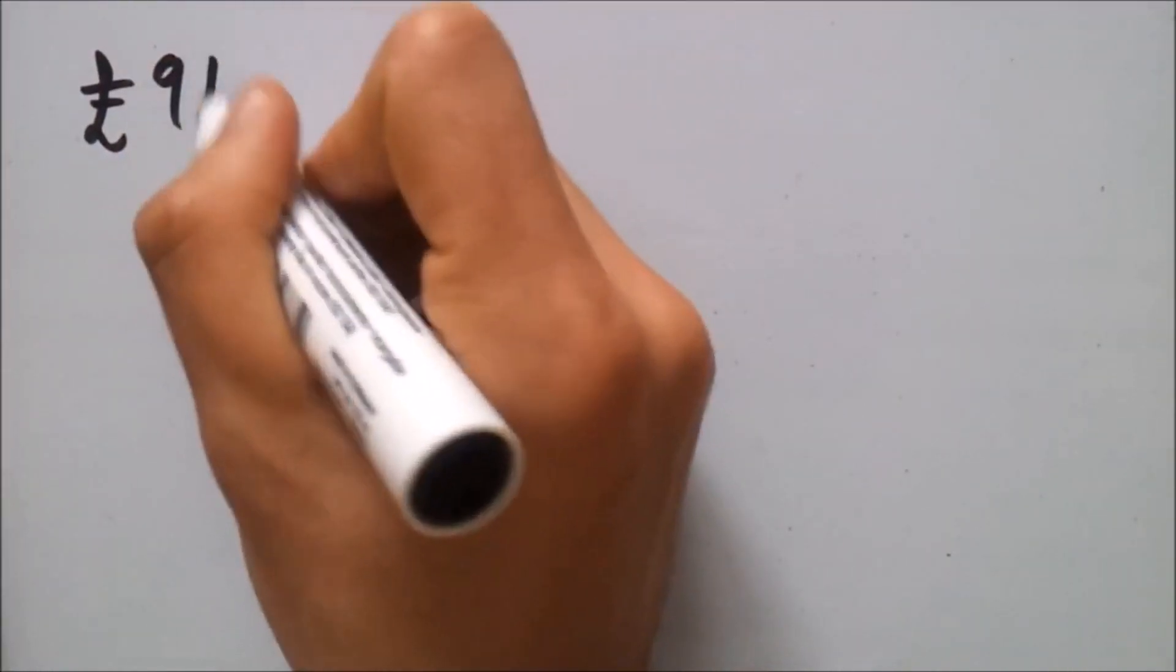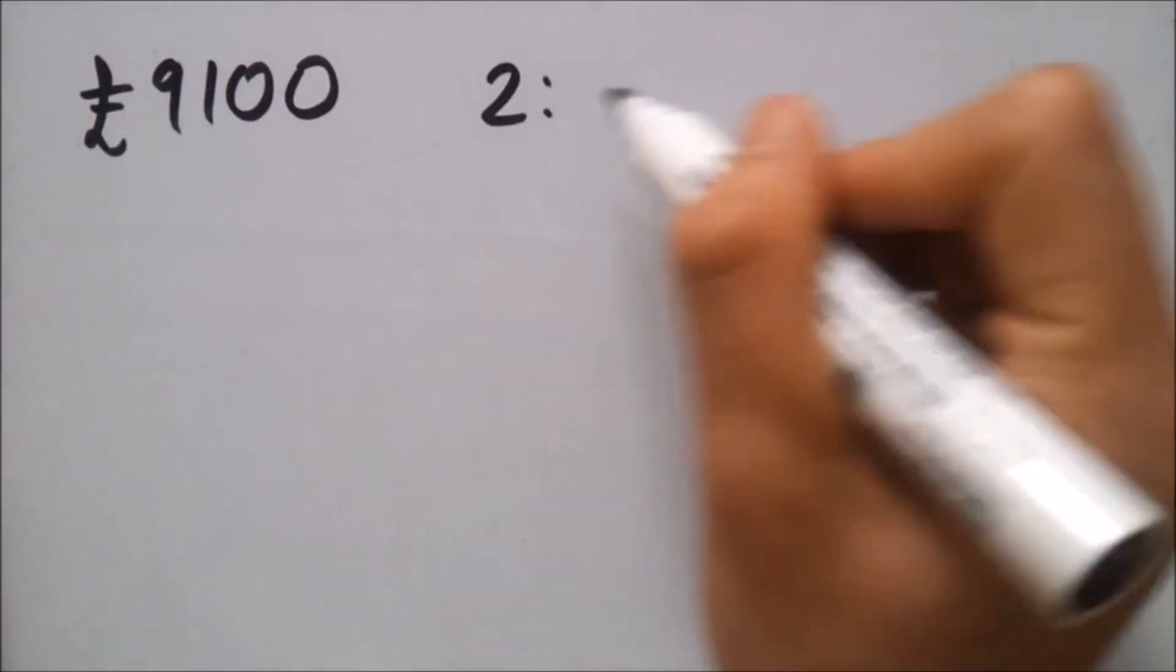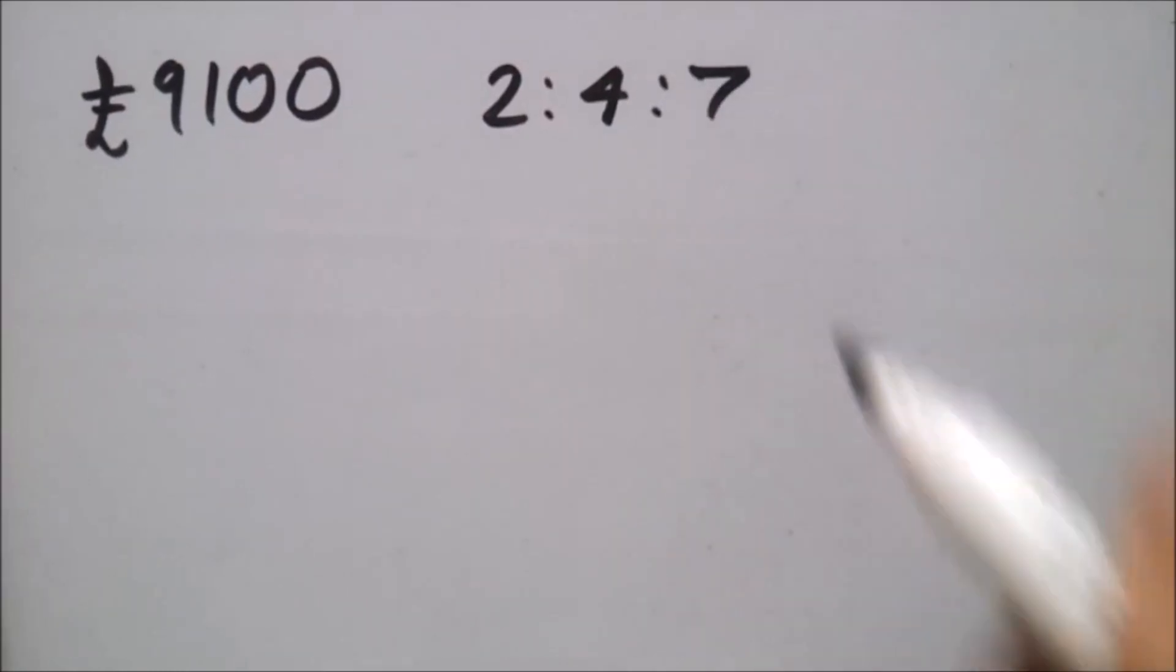Let's say we had £9,100 and you were told to split in the ratio of 2, 4, and 7.